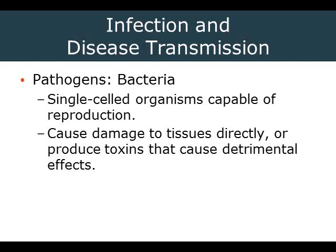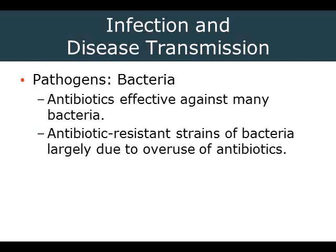To discuss specific pathogens: bacteria are single-celled organisms capable of their own reproduction. They cause damage either directly to tissues or by producing a toxin — like botulism, which produces the botulinum toxin, a potentially fatal byproduct. Antibiotics are effective against many bacteria; however, there are a growing number of resistant strains because we have been too quick to prescribe antibiotics, or because patients don't complete the full course.